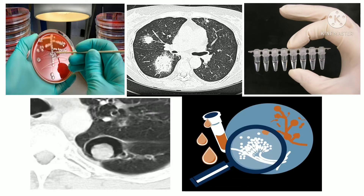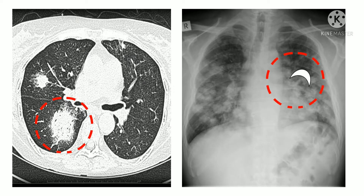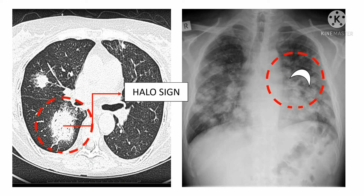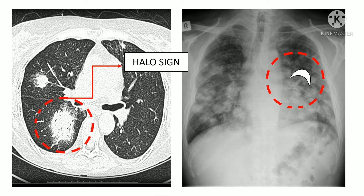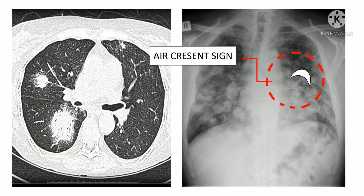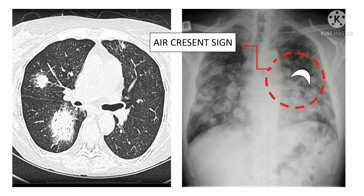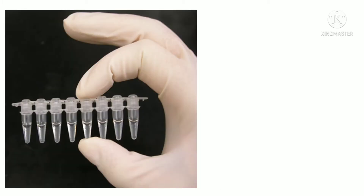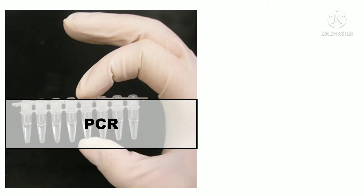For diagnosis, a CT scan or an X-ray is usually performed. On the left-hand side, there is a CT scan which shows a halo sign. This halo sign is usually due to a nodular mass present in the left lung. This halo sign later converts into the air crescent sign, which can be seen on the right side of the X-ray.